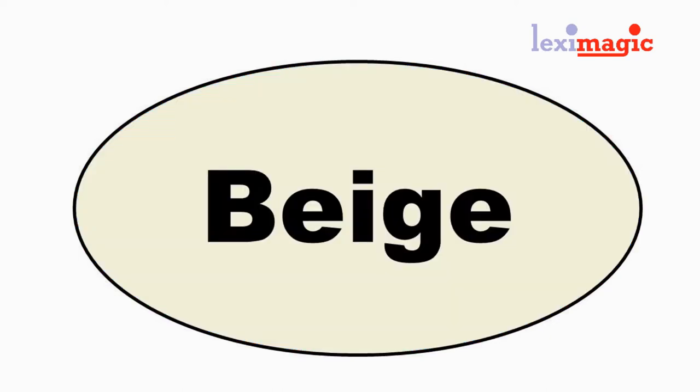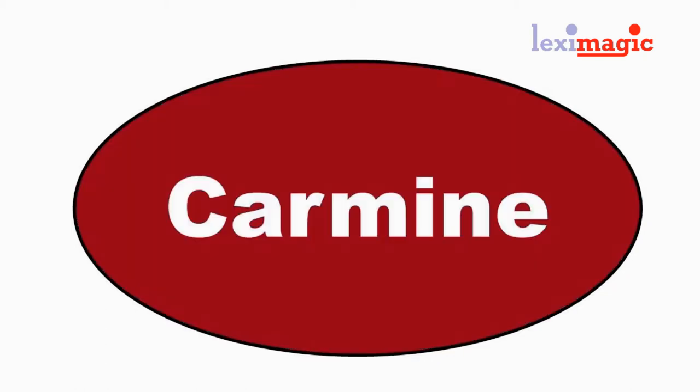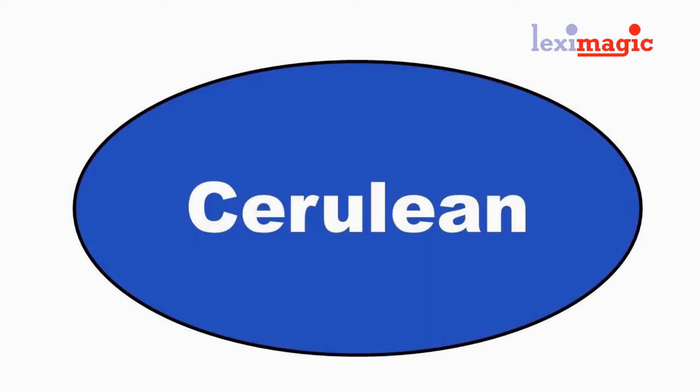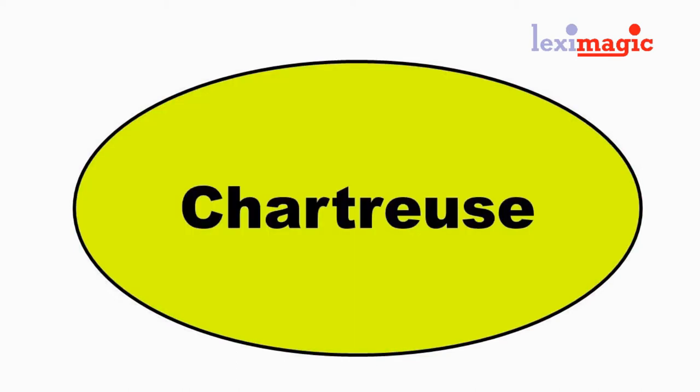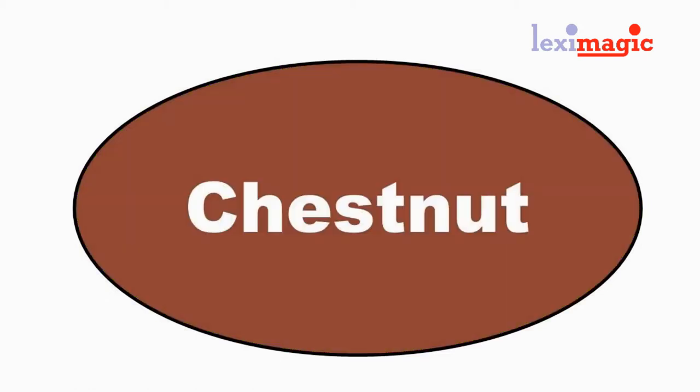Beige: a yellowish gray like the color of unbleached wood. Carmine: a purplish red. Cerulean: a greenish blue. Chartreuse: a greenish yellow. Chestnut: a dark reddish brown.